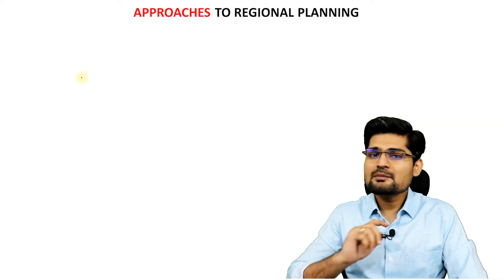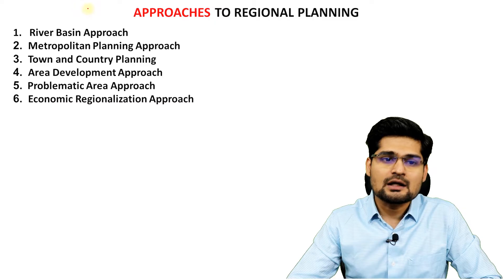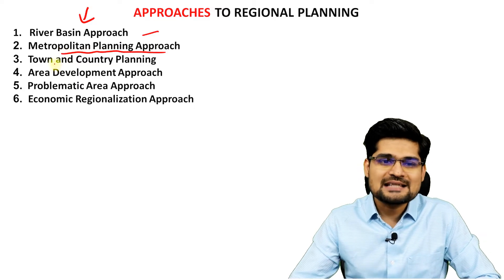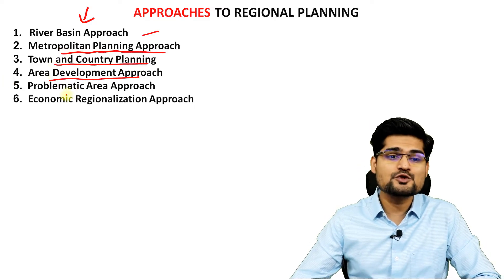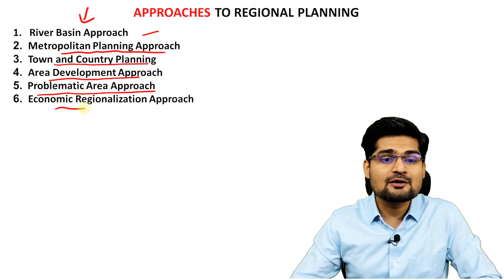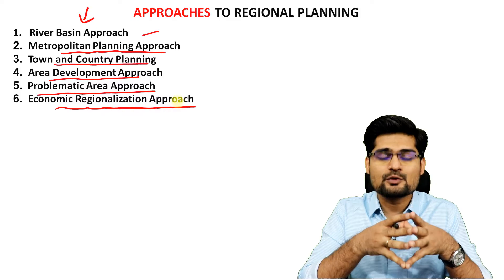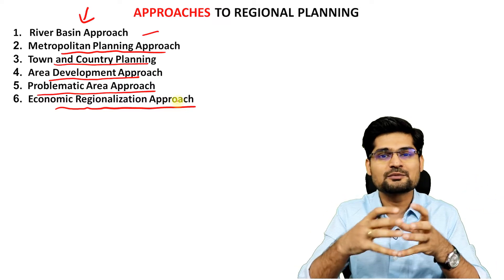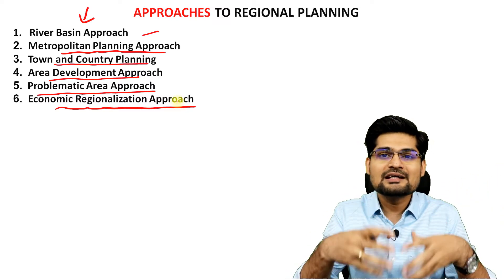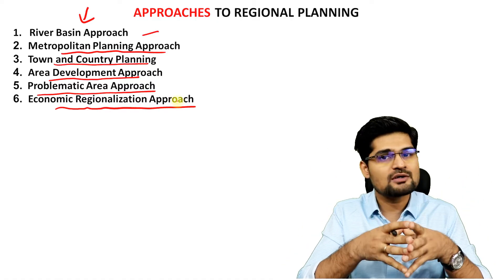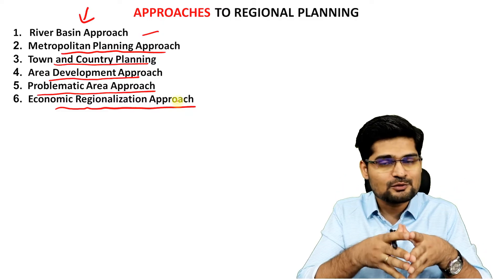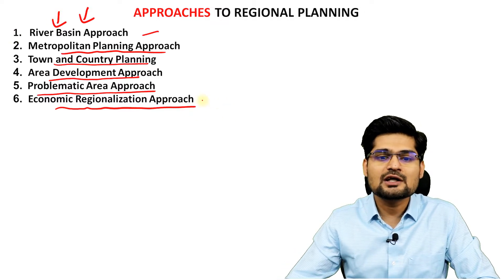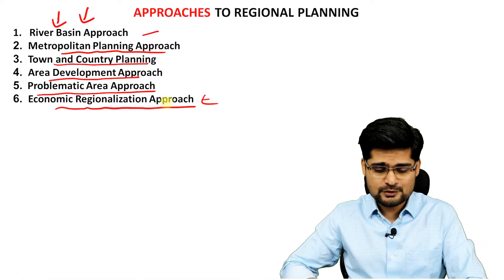There are six approaches to regional planning. Planners approach a region through: the river basin approach, metropolitan planning approach, town and country planning approach, area development approach, problematic area development approach, and economic regionalization approach. These have evolved over a long time — from Vidal de la Blache's concept of pays and genre de vie to aerial differentiation and further developments in geographical thought.